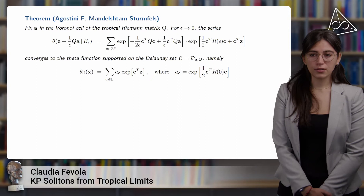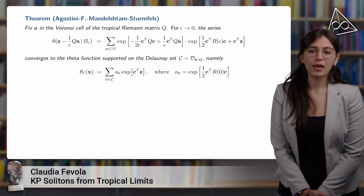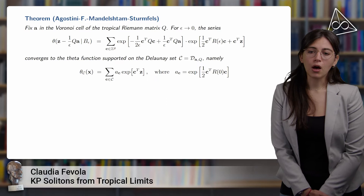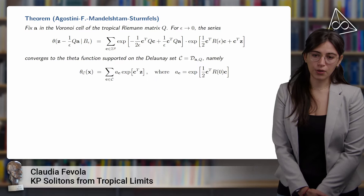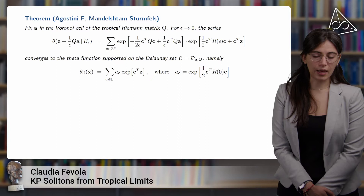Here is the theorem explaining the degeneration of the theta function. If we fix a point in the Voronoi cell and the tropical Riemann matrix, then the theta function converges to a finite sum of exponentials supported on the Delaunay set associated to the point A and the matrix Q. The coefficients A_C will depend on the point in the Delaunay set and on the matrix R when epsilon goes to zero.